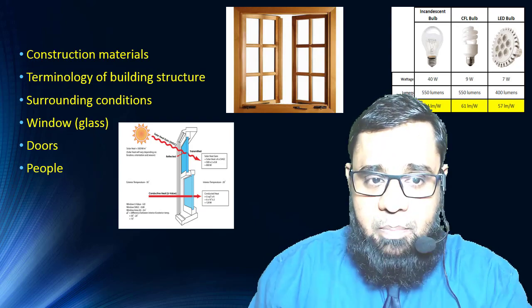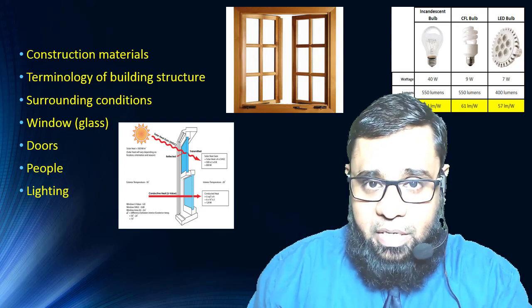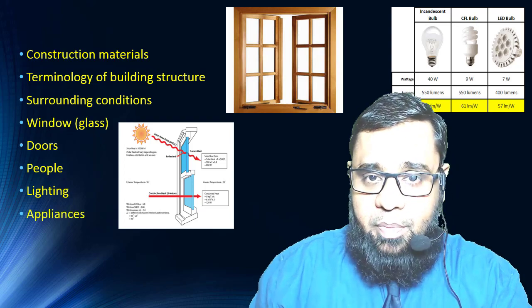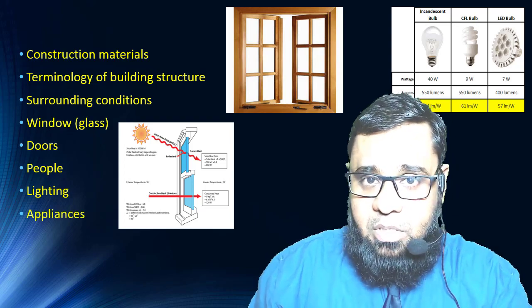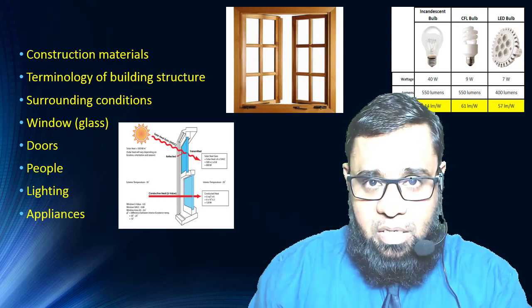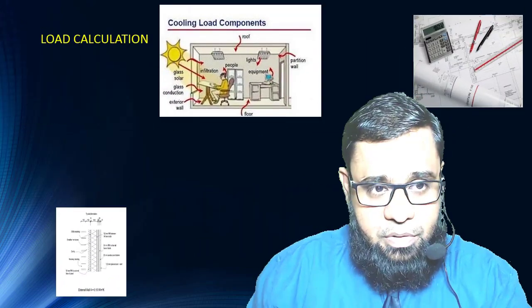Then the doors, the material, the size. Then people—how many people in a space as per the furniture layout and activity as per the application. Next, the lighting load, the types of light and the wattage from the electrical lighting layout. Then the appliances, whatever appliances are used, because appliances also generate heat.